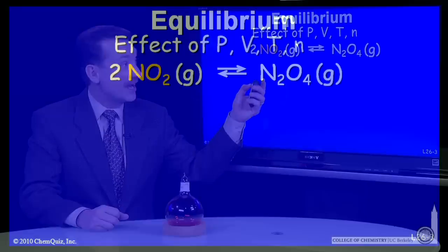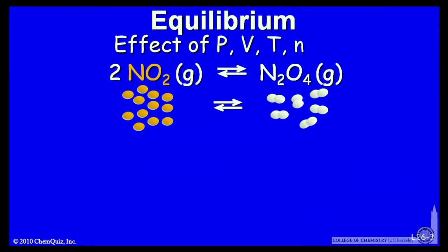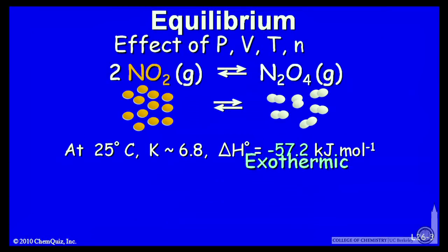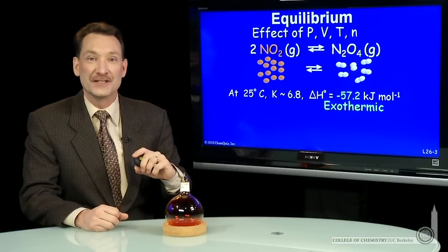Now, if I look at this equilibrium, we have NO2 going to N2O4. The equilibrium constant is 6.8, approximately, for this equilibrium at 25 degrees C.